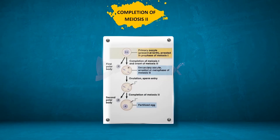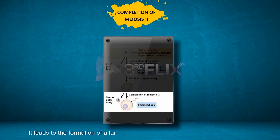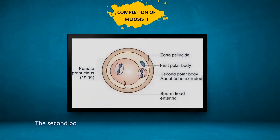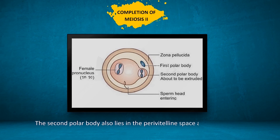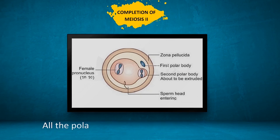The secondary oocyte completes meiosis 2. This is also an unequal division. It leads to the formation of a large ootid, or ovum, and a small second polar body. The second polar body also lies in the perivitelline space, along with the first polar body. It may divide mitotically to form two smaller polar bodies. All the polar bodies subsequently disintegrate.